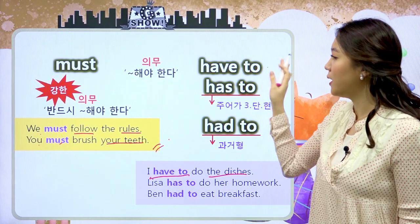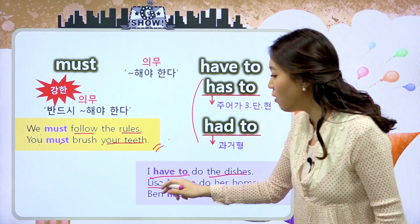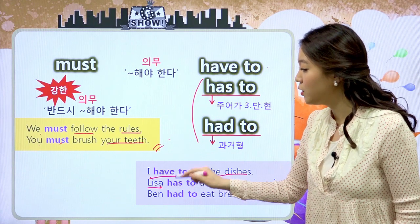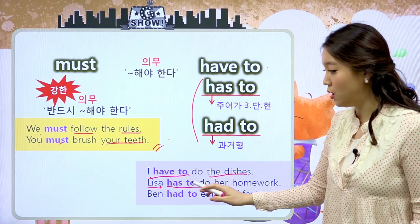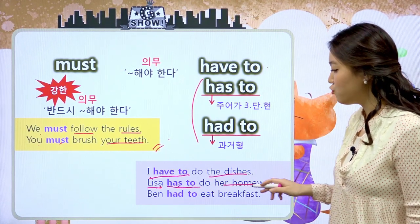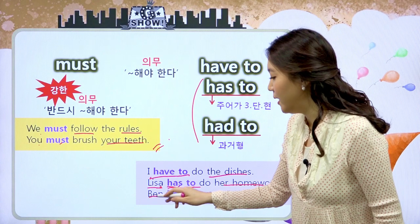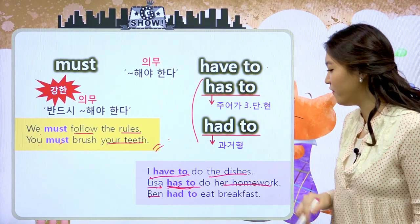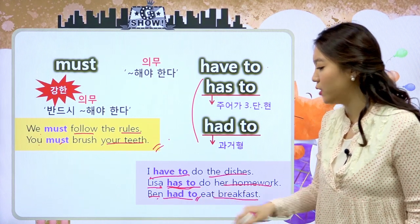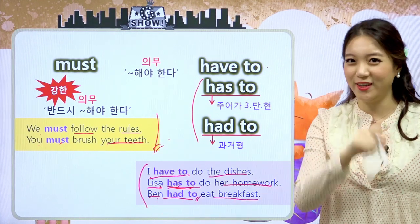have to와 must의 차이점은 have to는 변한다라는 것이었죠. Lisa 주어가 3인칭 단수예요. 그리고 현재시제예요. 그럴 경우 has to로 바뀐다고 했었죠. 그래서 'Lisa has to do her homework' 하면 Lisa는 그녀의 숙제를 해야만 한다 이렇게 되는 거예요. 과거형은 'Ben had to eat breakfast' 하면 Ben은 아침 식사를 해야만 했다라는 과거형이 되겠습니다. have to는 변한다는 거, must는 변하지 않는다는 거 꼭 기억해주세요.